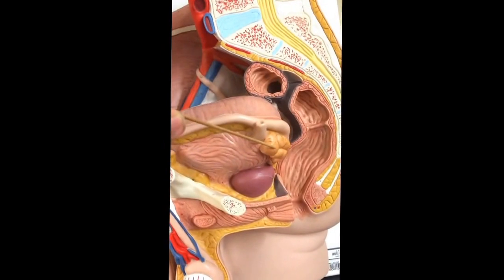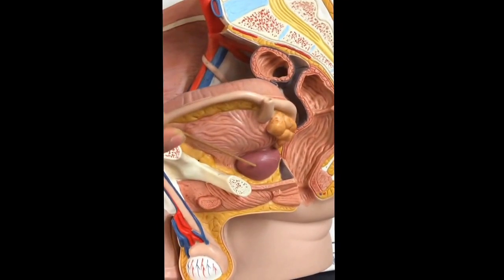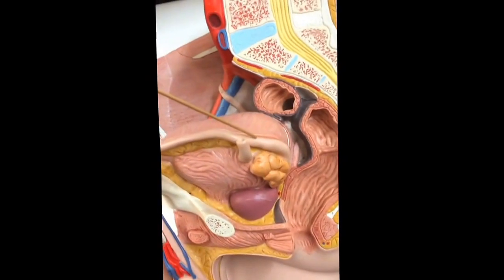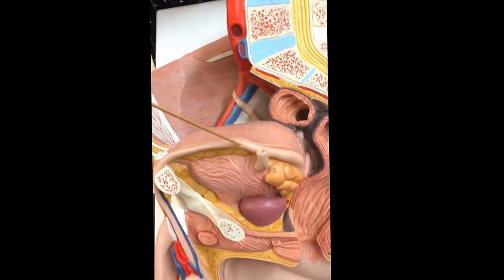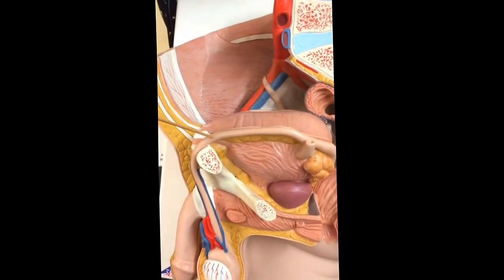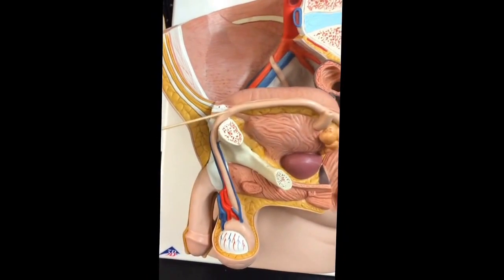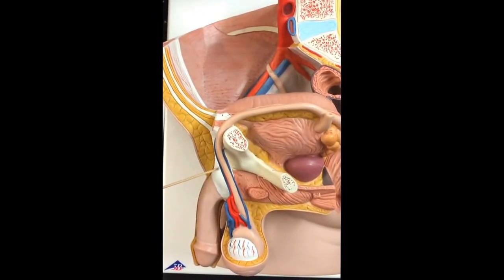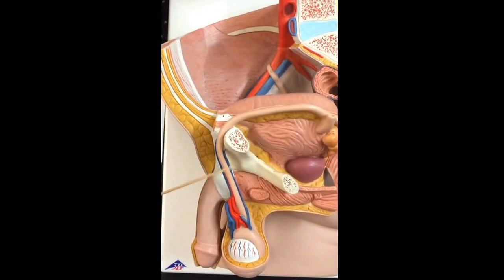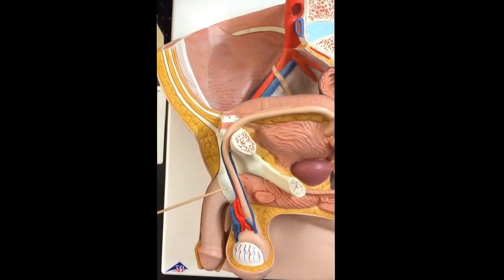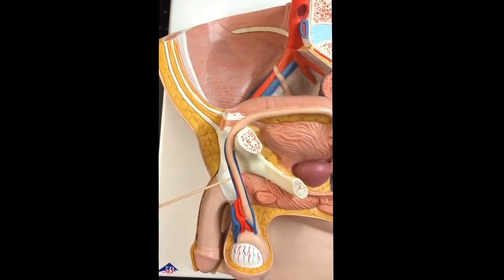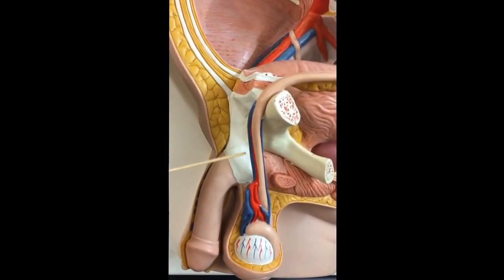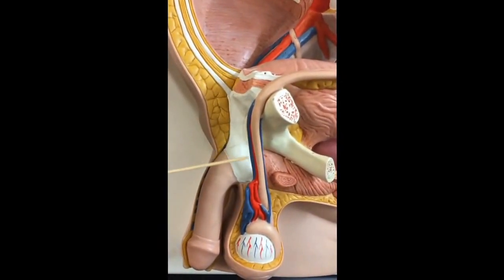Here is a seminal gland and this is the prostate gland. This structure here is the ductus deferens, or vas deferens. It leaves the abdominal cavity through the spermatic cord. The spermatic cord is a structure that contains the ductus deferens, testicular artery, and testicular vein. It should also have a nerve supply, but it doesn't show it on the model.